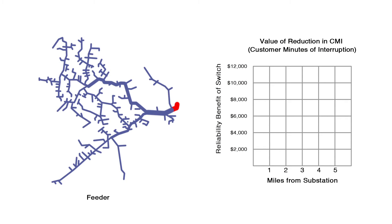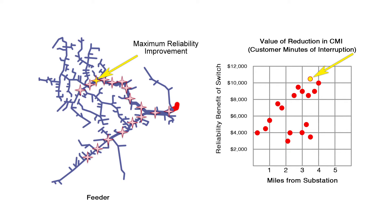As a first step, we simulate the placement of a switch at every single location on that circuit or feeder, and we calculate the new predictive reliability statistics and compare the difference. Through that iterative process, we pick the location that has the maximum reliability improvement and propose the siting of the switch at that location.